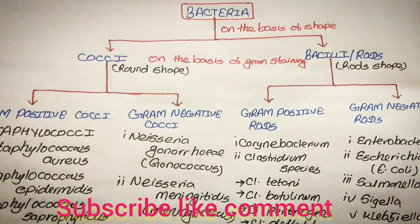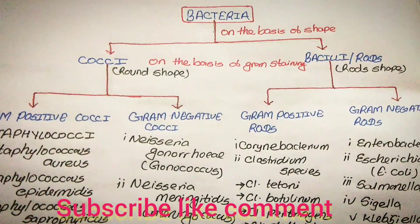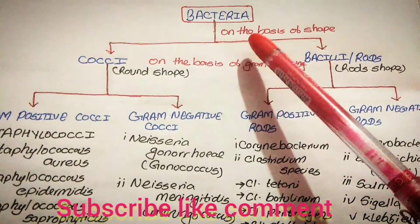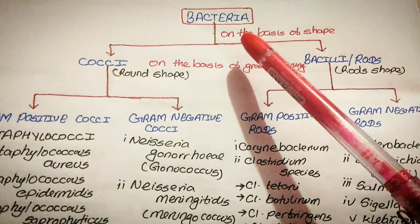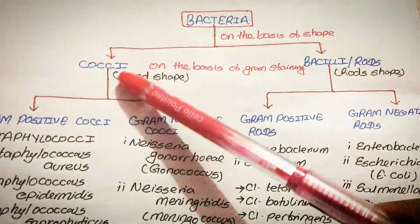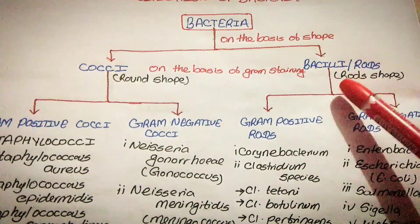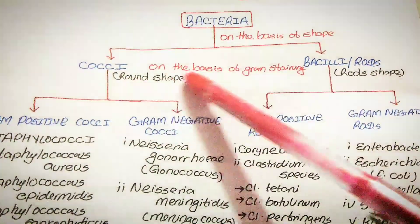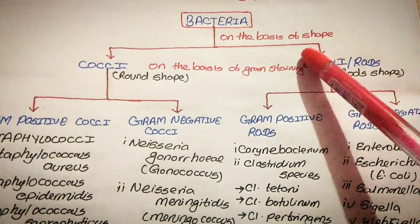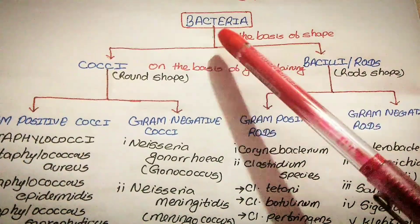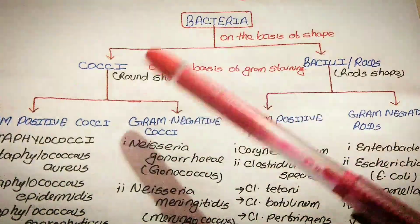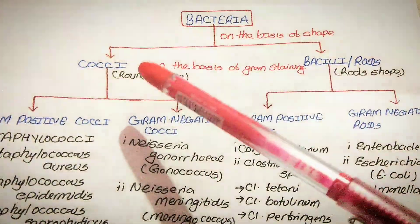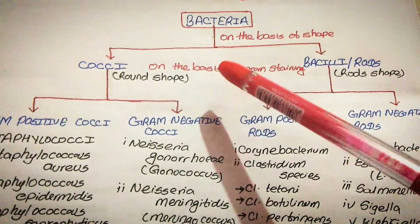Hello guys, welcome to our new video. Today we are going to discuss the classification of bacteria. When we classify bacteria, the first classification is based on shape. It is divided into two types: one is cocci and another is bacilli. Cocci means round shape, and bacilli means rod shape. Bacteria are divided into two types on the basis of shape: cocci and bacilli.